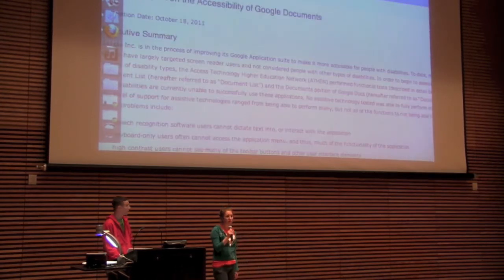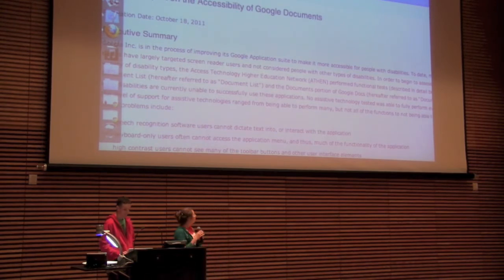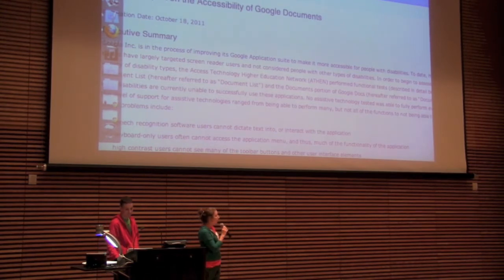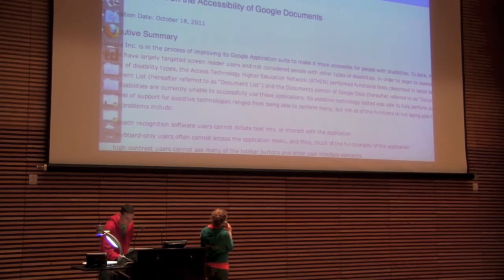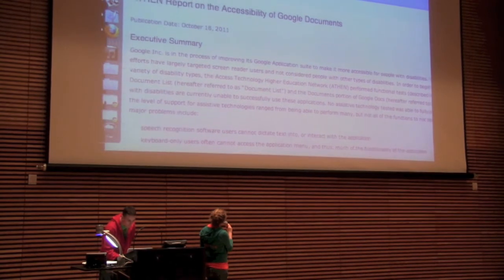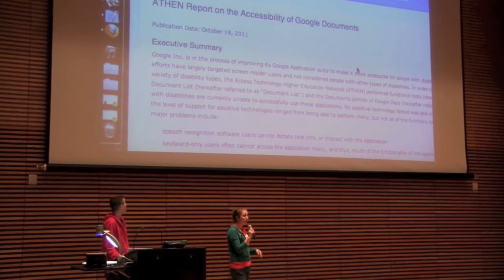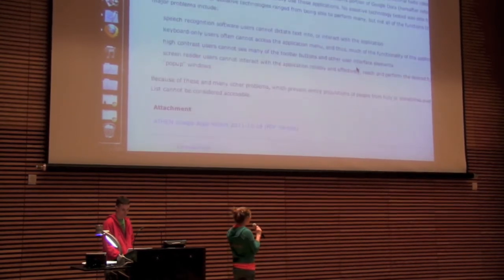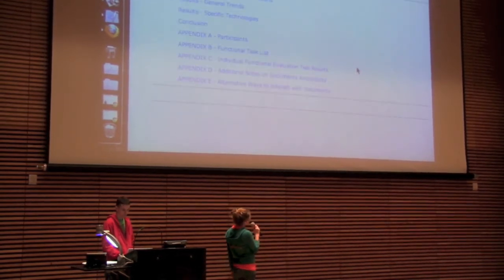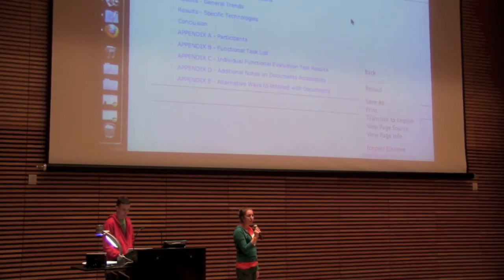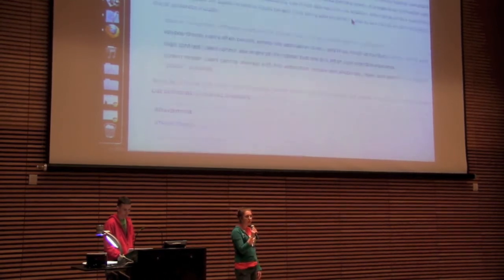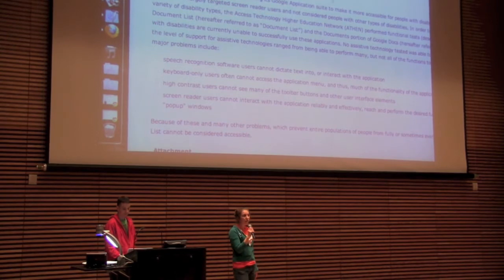And that's not just a university issue. In fact, many other Big Ten schools have this problem as well. And so this group, the Access Technology for Higher Education Network, is a non-profit group that looks at disability best practices. They went through and identified some of the issues that their users with disabilities identified when using the Google Suite.